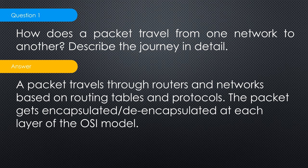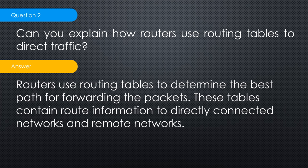Question two: can you explain how routers use routing tables to direct traffic? This is where networking topologies come in. Routers share their routing tables with each other using protocols like BGP, OSPF, and LLDP. Routers use routing tables to determine the best path for forwarding packets. These tables contain routing information for directly connected and remote networks. Each router shares its table — which includes its neighbors — so routers know where to send traffic.